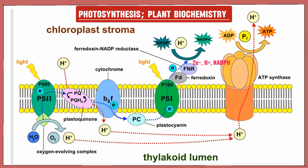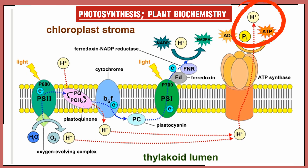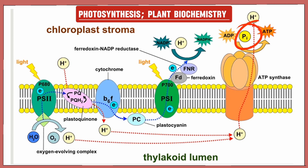In ATP synthase, all the protons in the lumen move toward ATP synthase because they want to diffuse from the lumen into the stroma. ATP synthase uses them to power the production of the high-energy molecule ATP. For every three protons that pass through ATP synthase, one molecule of ADP is combined with inorganic phosphate to create ATP. That concludes the light-dependent reaction.